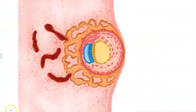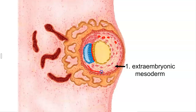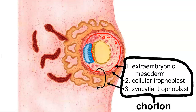The inner cell mass is organized into an embryonic disc, and that embryonic disc undergoes gastrulation where a new cell layer called the mesoderm is formed. Not all of the mesoderm is contained within the embryo — there are extra-embryonic mesodermal cells that line the cellular trophoblast. Once the mesoderm lines the cellular trophoblast, we no longer use the terminology of trophoblast. Instead, we refer to all of these layers — the mesoderm, the cellular trophoblast, and the syncytial trophoblast — as the chorion.